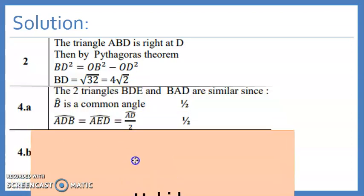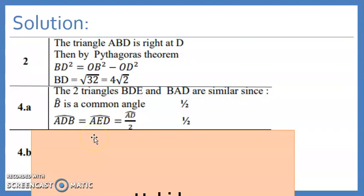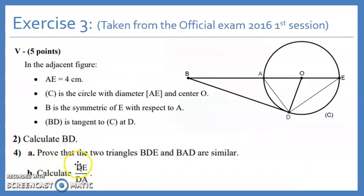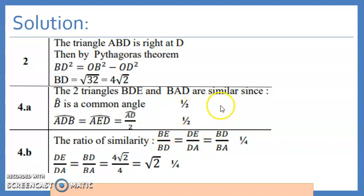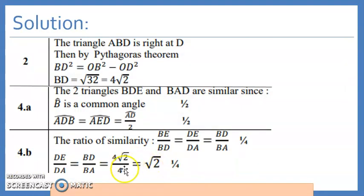This is the solution, also B is a common angle, and these two angles are equal. Now calculate DE over DA. So we set the ratio of similarity in the same method that I stated before. So you set the method of the ratio of similarity, so you get this ratio. And now you're asked about DE over DA, DE over DA, so you will need this ratio. And now how do you choose between these two ratios? Usually you choose the ratio that you know the measurements of its sides. In this exercise, you know both of them, so you can choose whatever you want. So I'll choose BD over BA. Now I have that BD is 4 radical 2 using part 2, and BA is 4 centimeter because it's the diameter. So it's equal to the diameter AE because B is the symmetric of E with respect to A. So it's 4 and we're done. So it's radical 2.